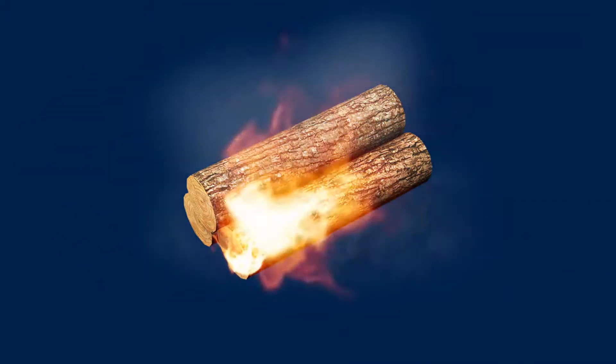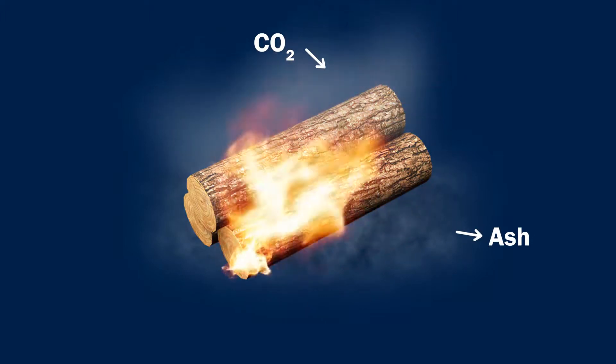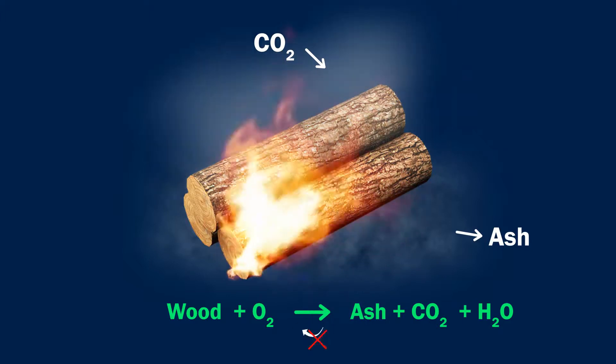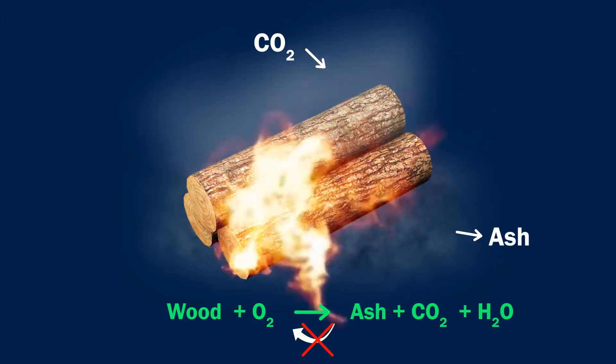After burning wood, ash and carbon dioxide is produced. In this change, new products are formed and it is hard to convert them back to wood.